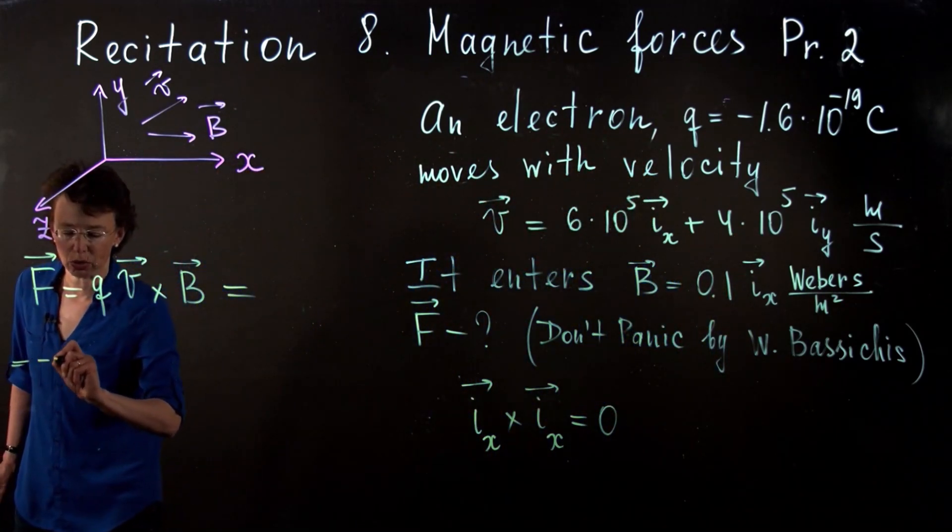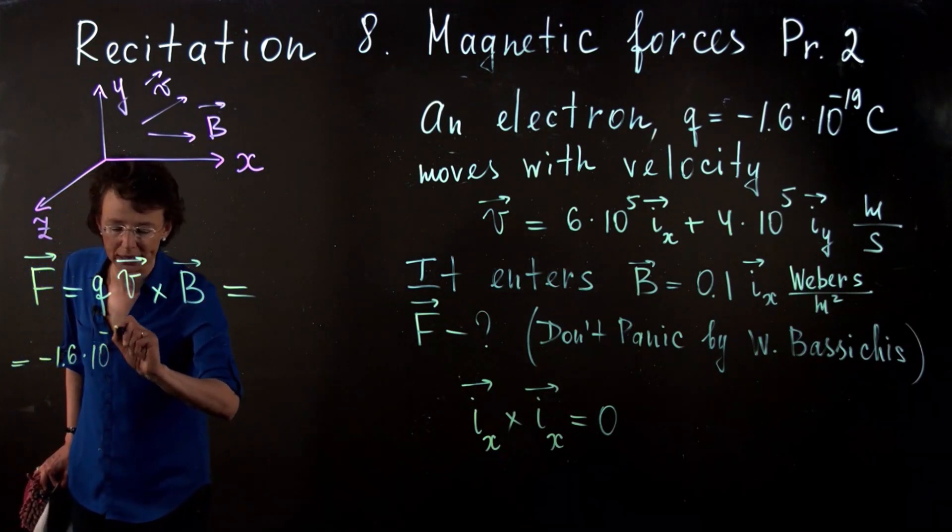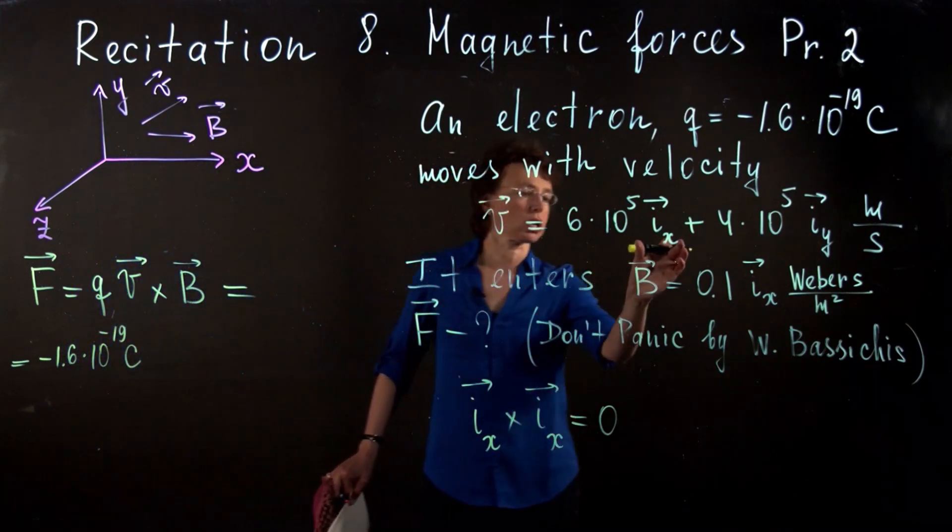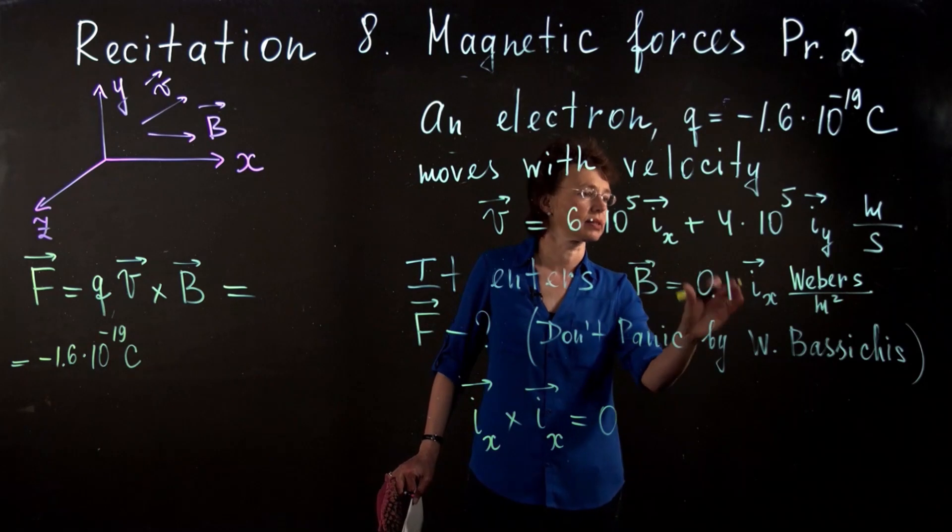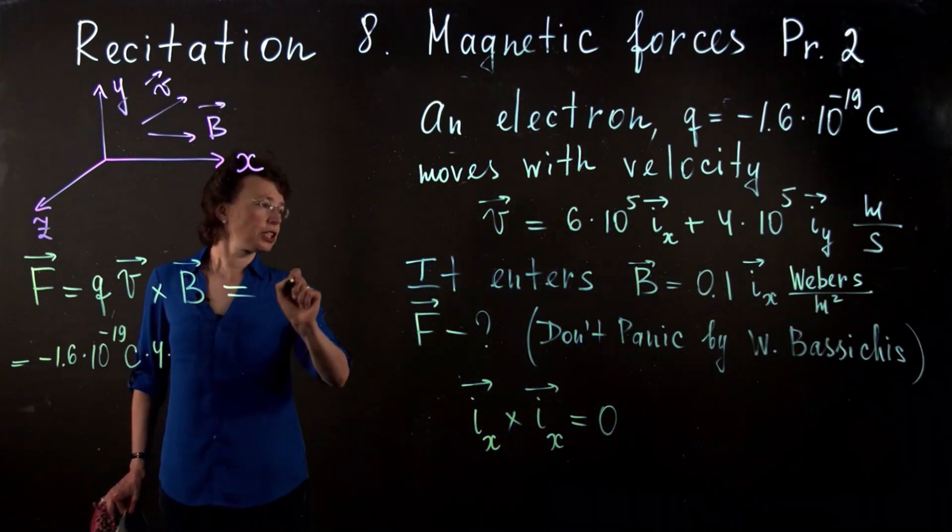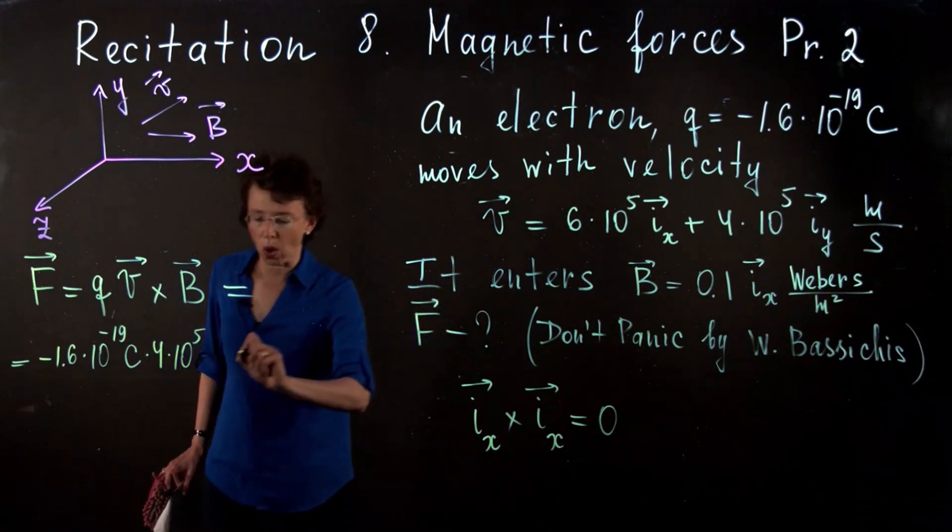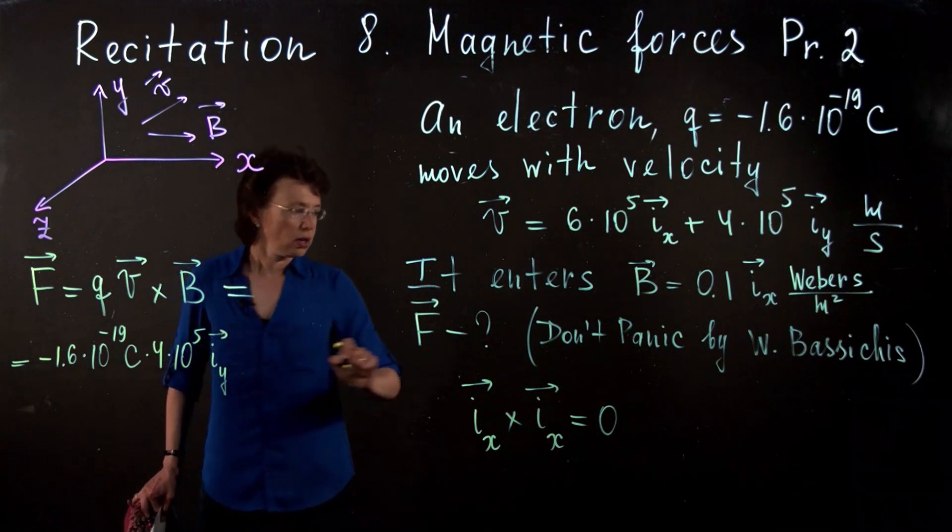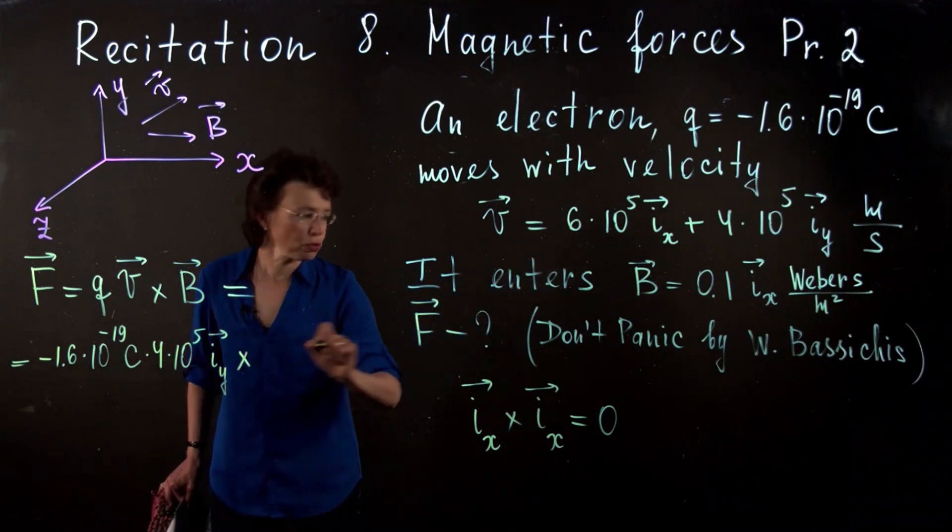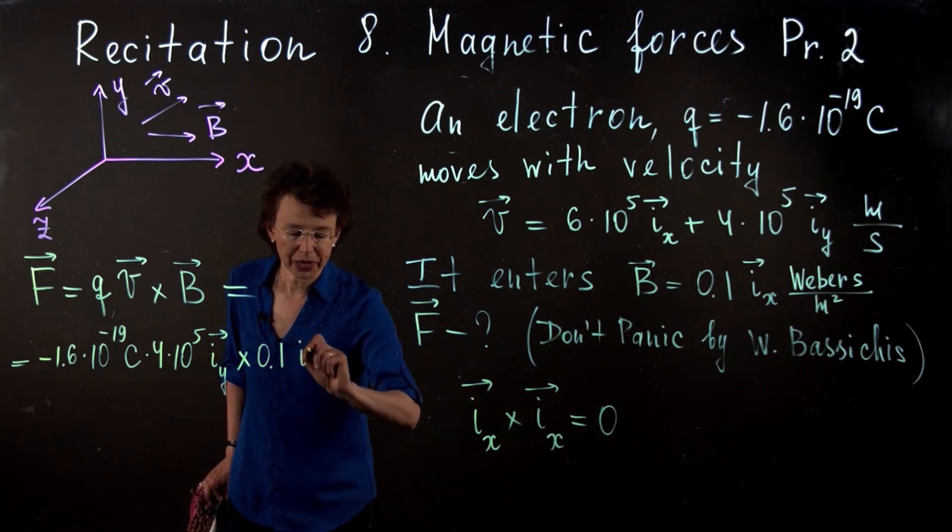But first of all, let's write the whole expression. q is minus 1.6 times 10 to minus 19 coulombs. We just discussed that we ignore the ix component because ix cross ix is zero. Then I have 4 times 10 to the fifth iy, then cross product with the magnetic field which is 0.1 ix.